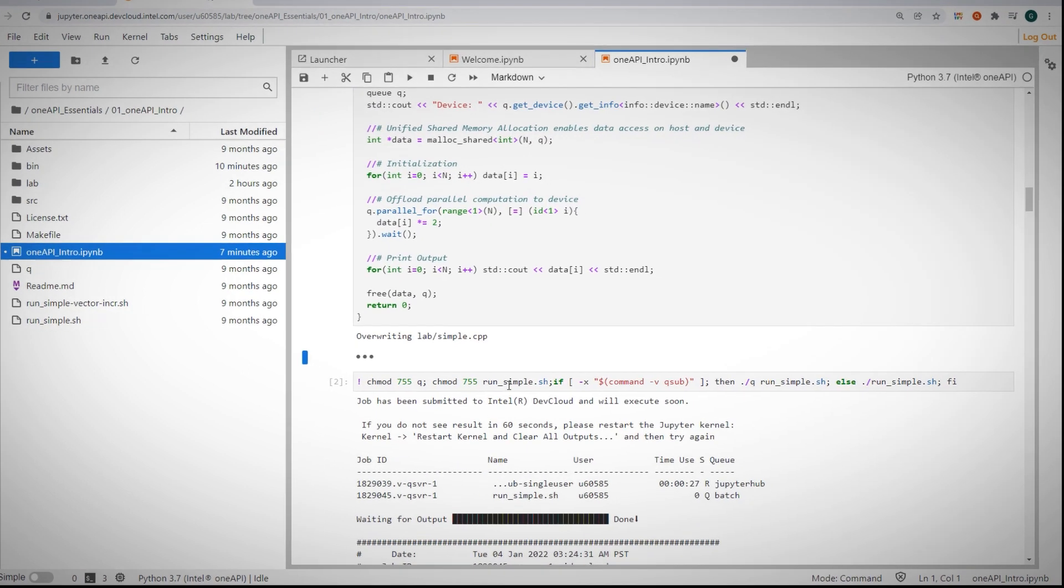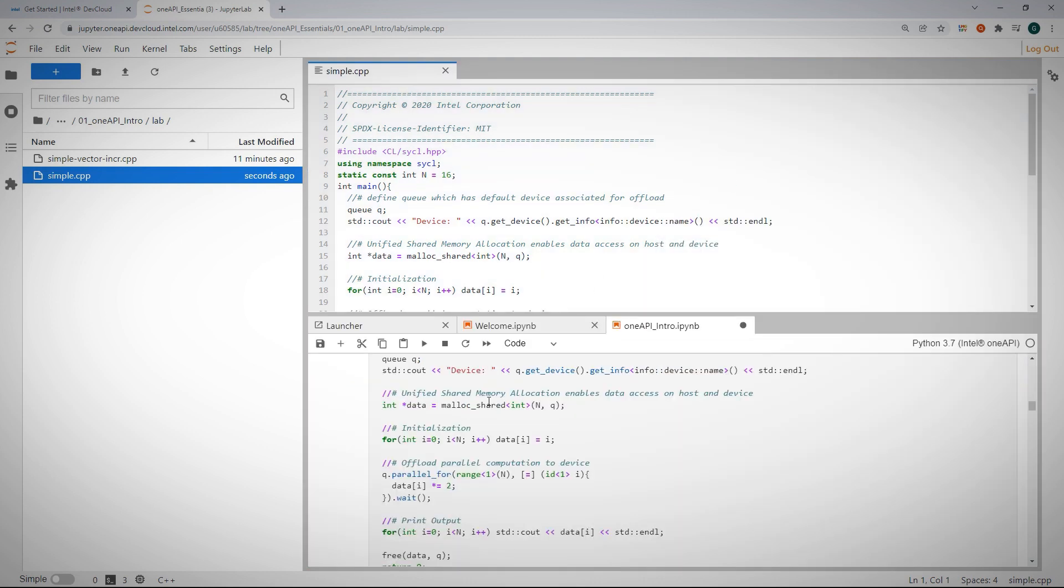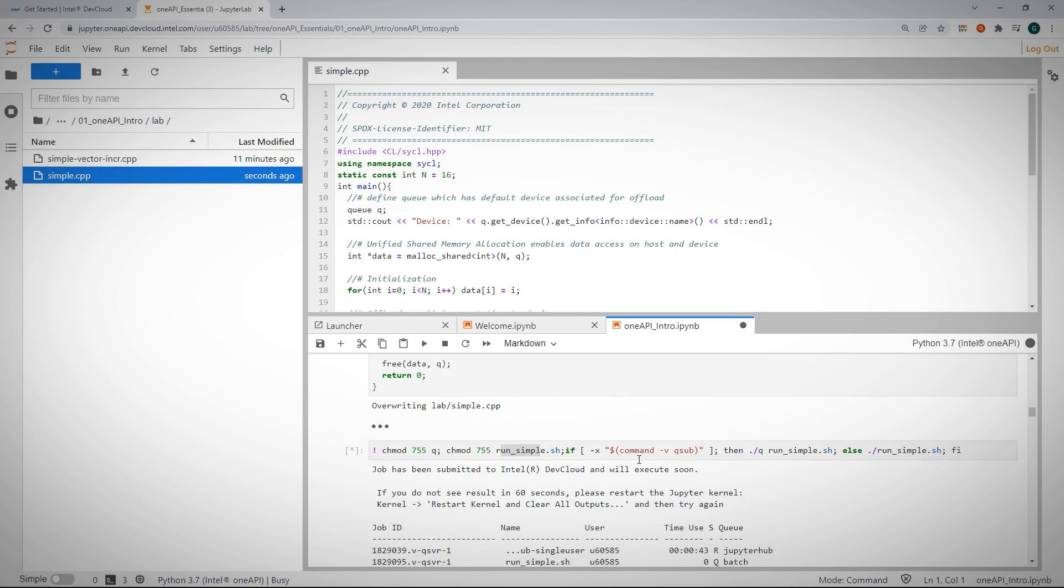The run simple script is running simple.cpp under the lab directory. Let me arrange the windows. And while the code is running, let's look at the code.